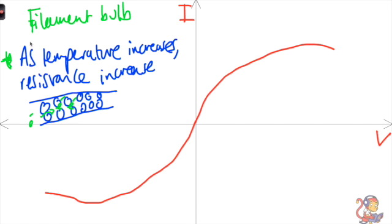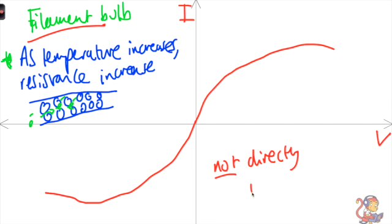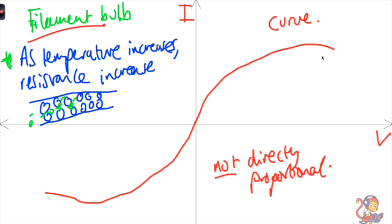For a filament bulb, we need to recognise this as the shape of a current-potential difference graph. This time the relationship is not directly proportional, because we don't have a straight line through zero — instead we get this curved relationship.